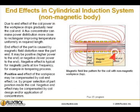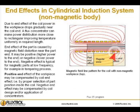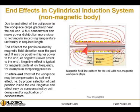End effects in a cylindrical induction system: in a non-magnetic body, due to the end effect of the coil, power in the workpiece drops gradually near the coil end. A flux concentrator can make power distribution more close to rectangular, improving temperature uniformity in the required length. The end effect of the part is caused by magnetic field distortion near the part end.